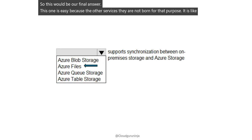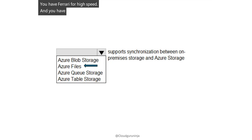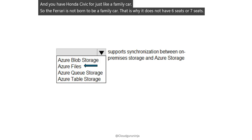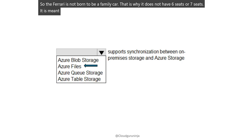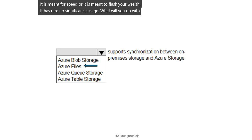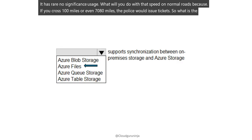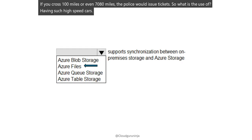The other storage services are not built for that purpose — it is like a Ferrari. A Ferrari is built for high speed, not to be a family car, which is why it does not have six or seven seats. What will you do with that speed on normal roads? If you cross even 70-80 miles per hour, the police will issue tickets — unless you are a Formula 1 racer.